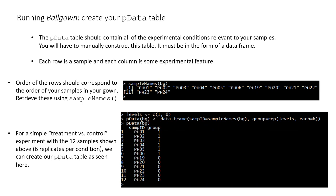For a simple treatment versus control experiment with, say, 12 samples as we had above, 6 replicates per condition, we can create a pdata table that has a single experimental conditions column with two levels. Here you can see how to create such a table where the conditions column has been named group.